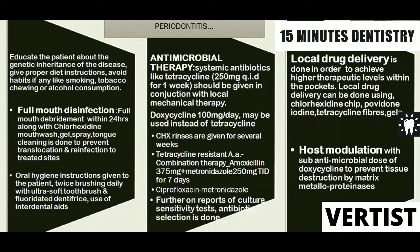Treatment begins with non-surgical therapy: full-mouth disinfection, patient education about genetic inheritance, and oral hygiene instructions. For antimicrobial therapy, the drug of choice for localized aggressive periodontitis is systemic tetracycline 250 mg four times a day for one week, given in conjunction with local mechanical therapy — thorough scaling and root planing. Don't give antibiotics alone. If the patient cannot take tetracycline four times a day, switch to doxycycline 100 mg per day. Chlorhexidine rinses are given for several weeks.